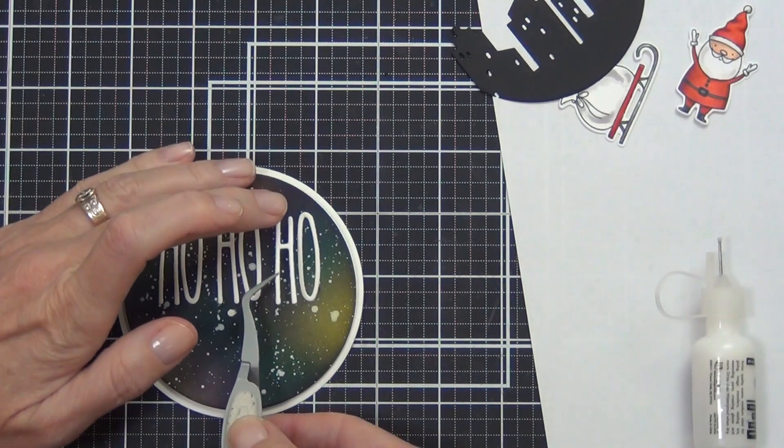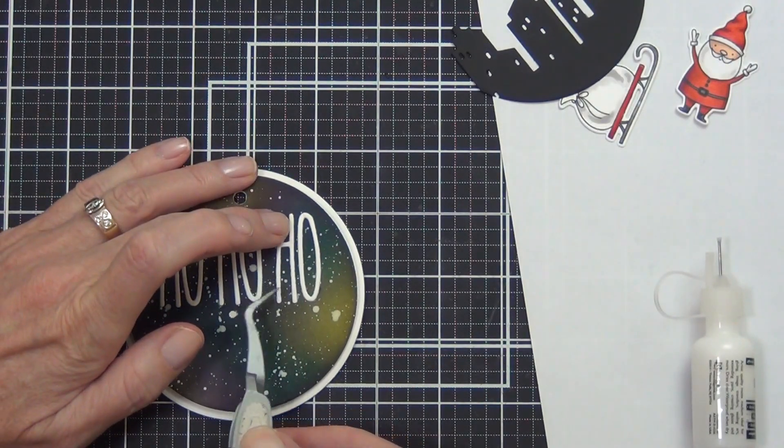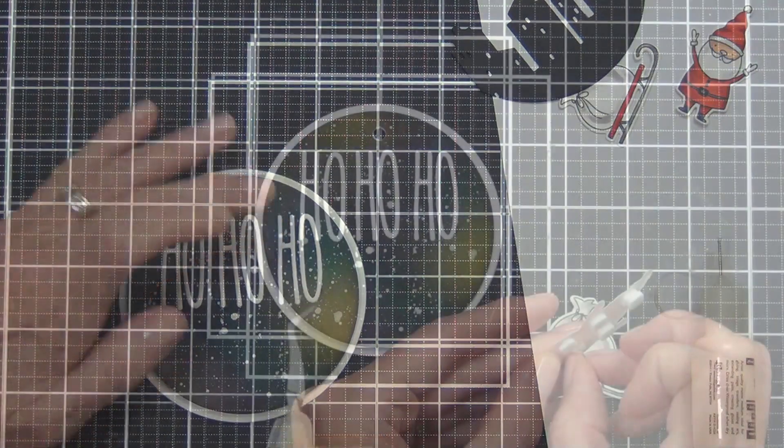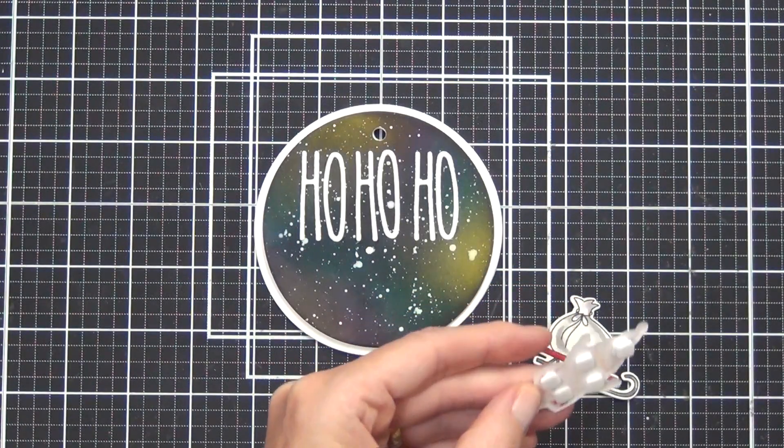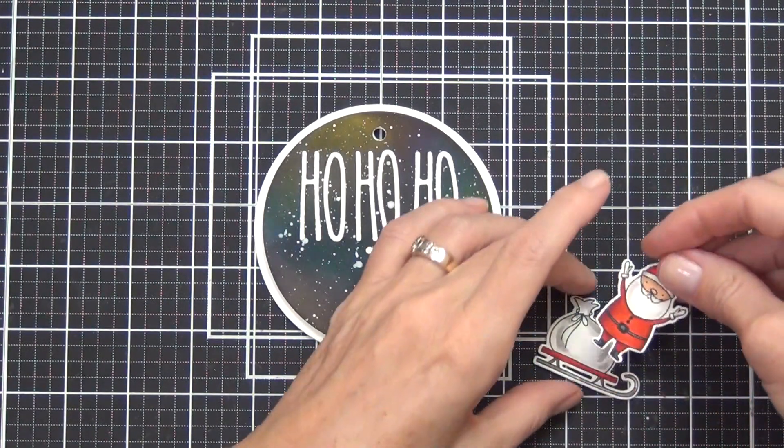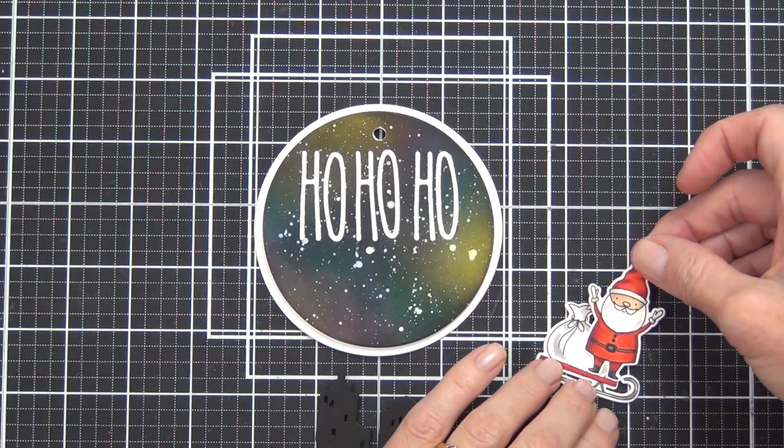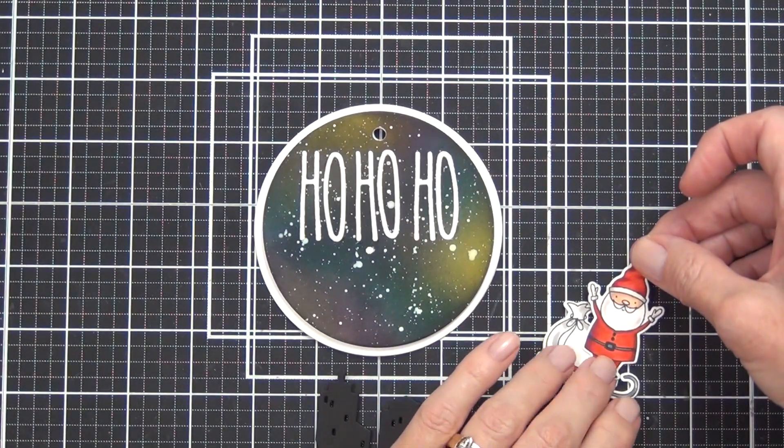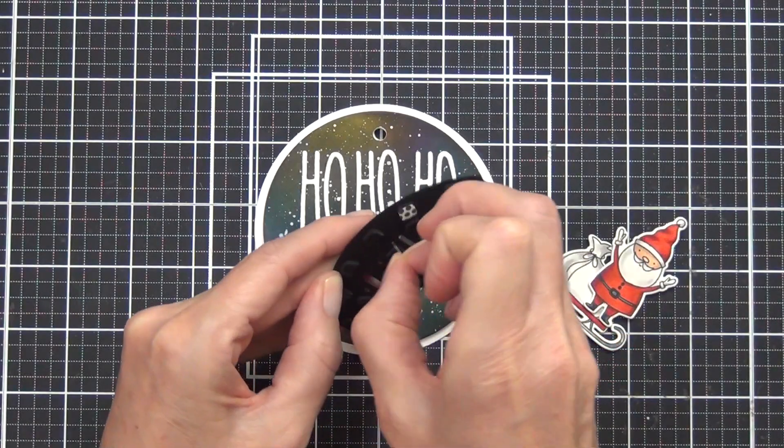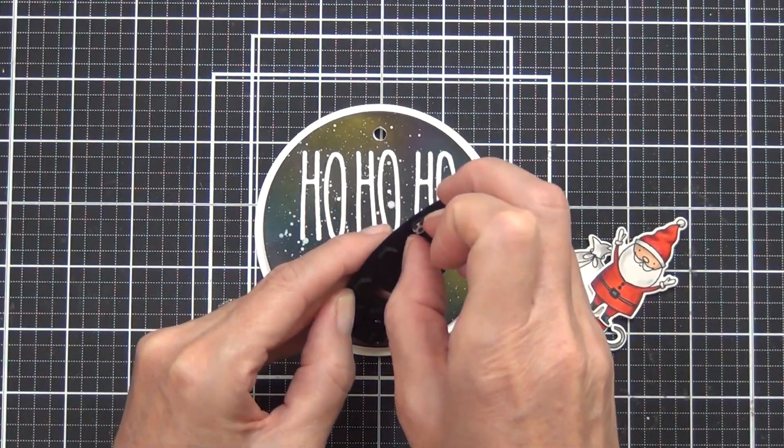I find it easier to hold the die cut with my tweezers and then be able to just lay that onto the background. I have also popped up my Santa and my city. I did use some black foam squares on the city itself just so you can't see those sitting in behind the image.